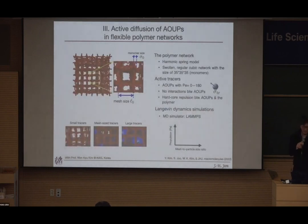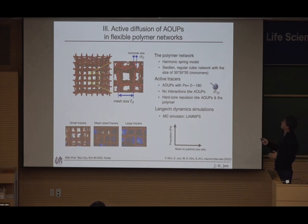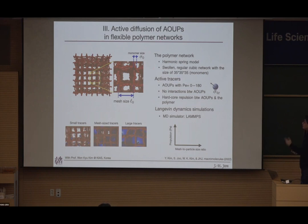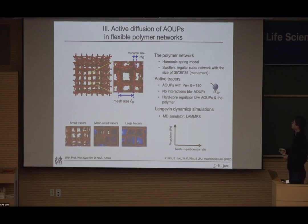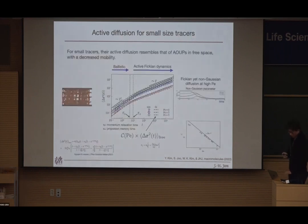With a couple of minutes remaining, the second part concerns an active particle embedded in a polymer network — constructed as a cubic lattice. We have an active tracer AOUP particle with varying Péclet number and varying particle size. We want to know how active diffusion changes as we vary these two parameters. We ran full simulations. For small tracers, my student Youngjin will explain. For larger particles trapped within the network mesh, a typical trajectory shows trapped-and-hopping diffusion.